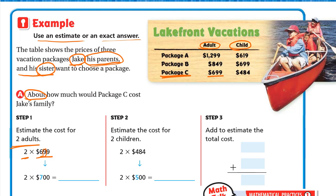The 9 is a strong digit so 600 rounds up to 700. 2 times 700: 2 times 7 is 14, and we write the two zeros, giving $1400 for the parents. For the two children, each child is $484. Rounding to the nearest hundred, the 8 is strong so 400 rounds up to 500. So 2 times 500: 2 times 5 is 10, and we write the two zeros.